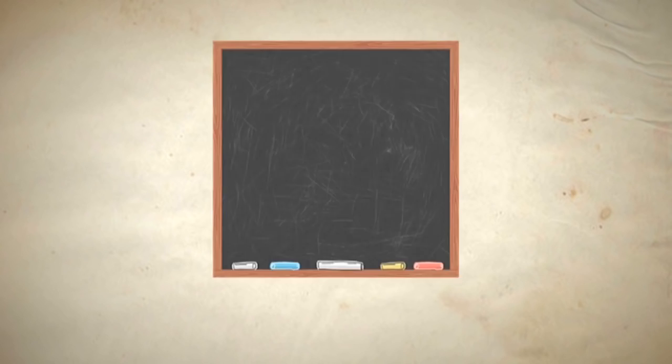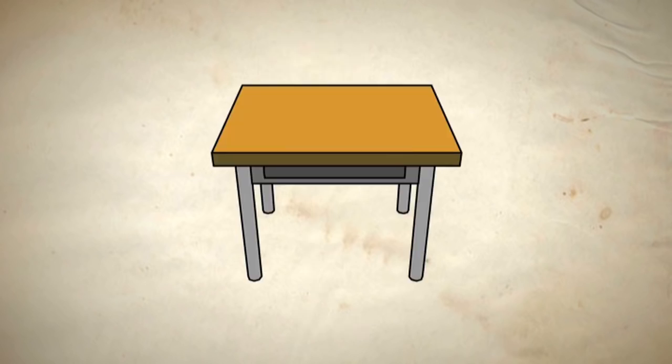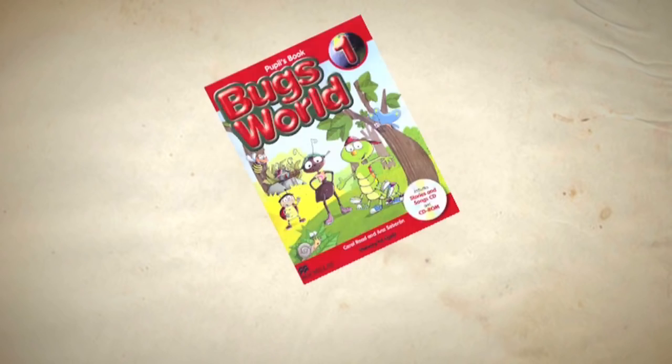Try to say the classroom objects by yourself before the word appears. Blackboard, chair, desk, book.